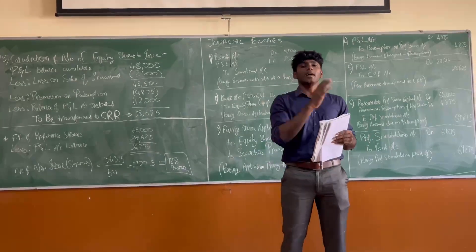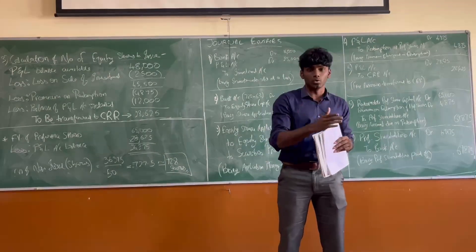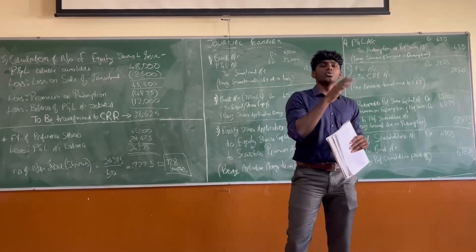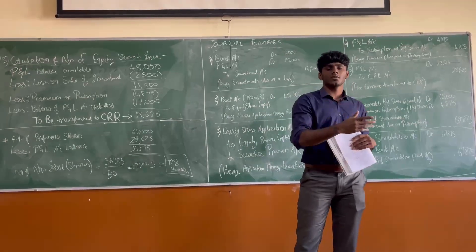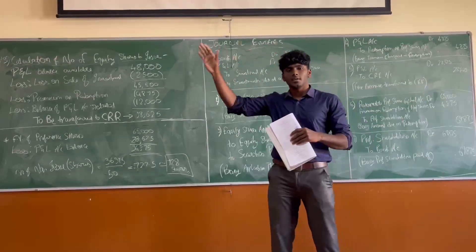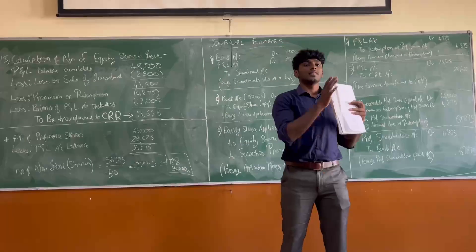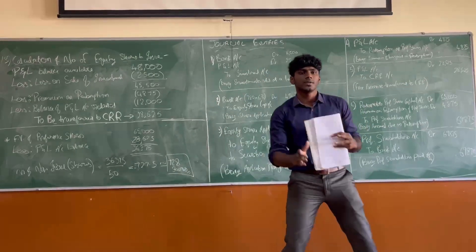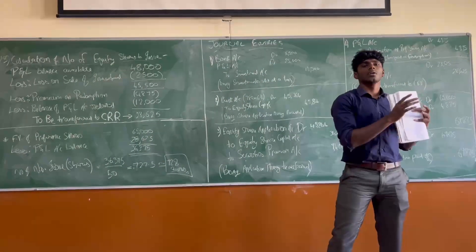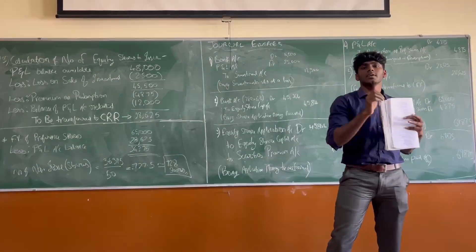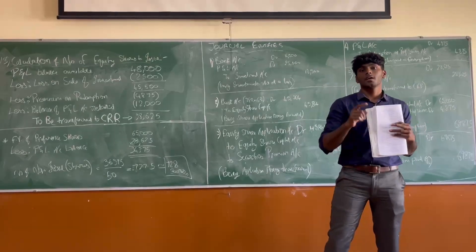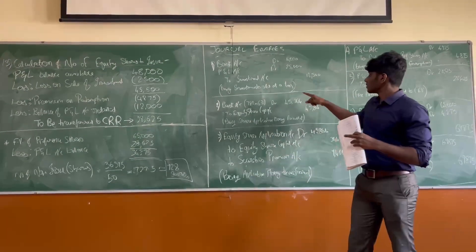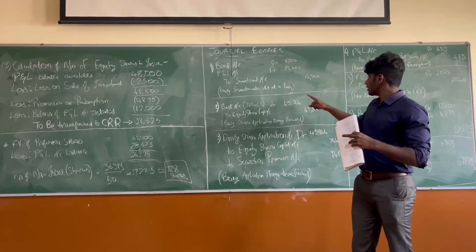An important rule in accounting is: whenever you use the general reserves to pay off the redemption, the same amount which you use shall be transferred to an account called Capital Redemption Reserve. That's very important. We'll look at the journal entries later.